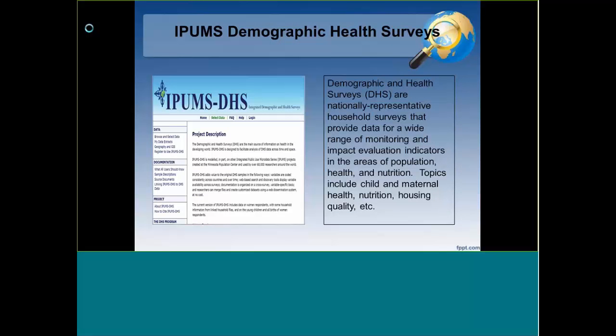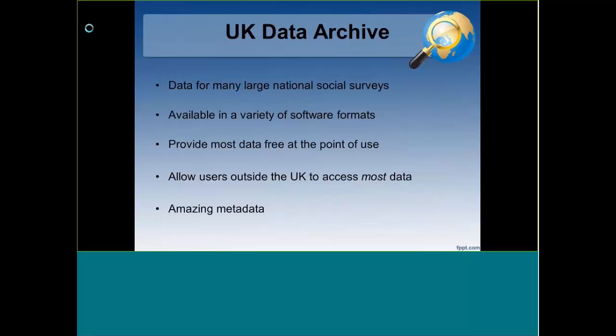Something they recently added, which is really exciting: they now have access to the USAID Demographic and Health Surveys, which are nationally representative household surveys that provide data — hundreds of datasets over time, although not all are in here — for a wide range of indicators in the areas of population health and nutrition, child and maternal health, housing quality, and so on.